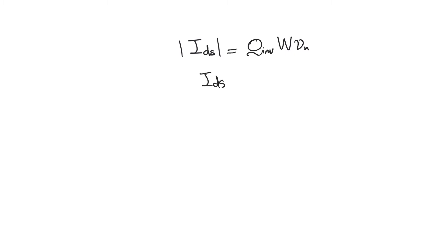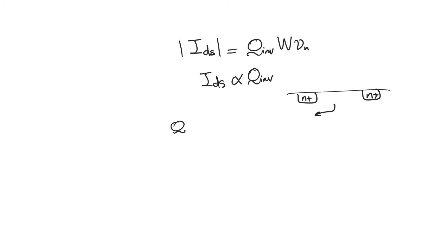IDS is obviously directly proportional to the amount of inversion charge in the channel. In the channel of an NMOS, the amount of inversion charge is the electron concentration. So Q_INV is basically q times N, where N is the concentration of electrons at the surface.